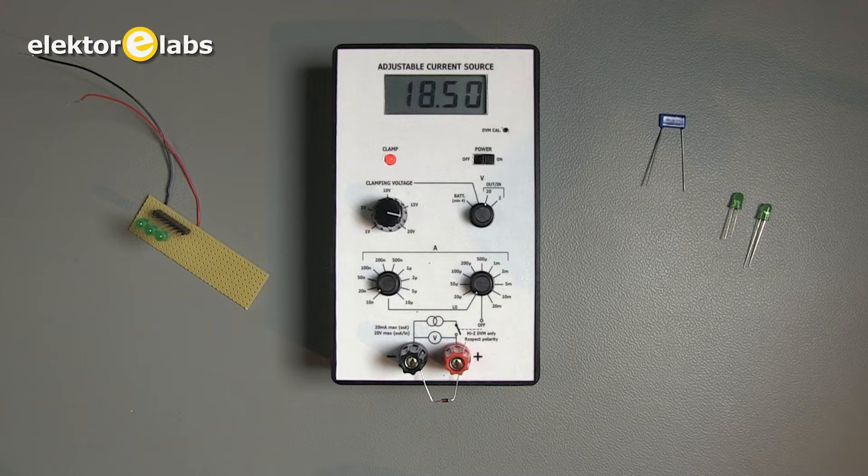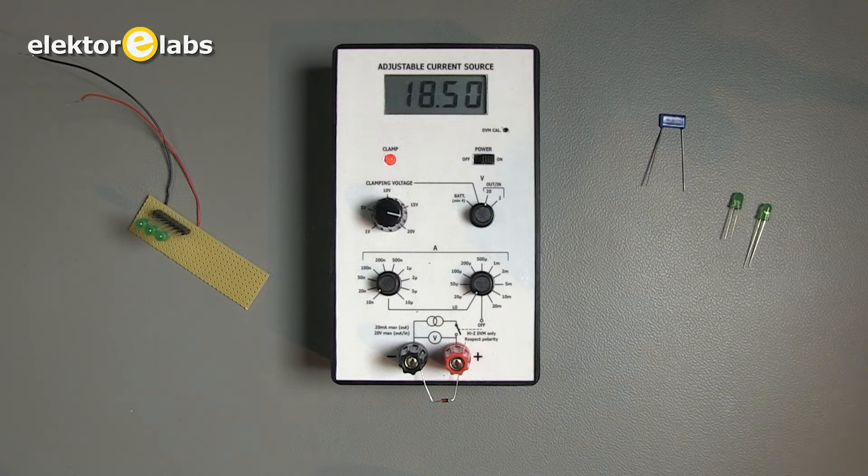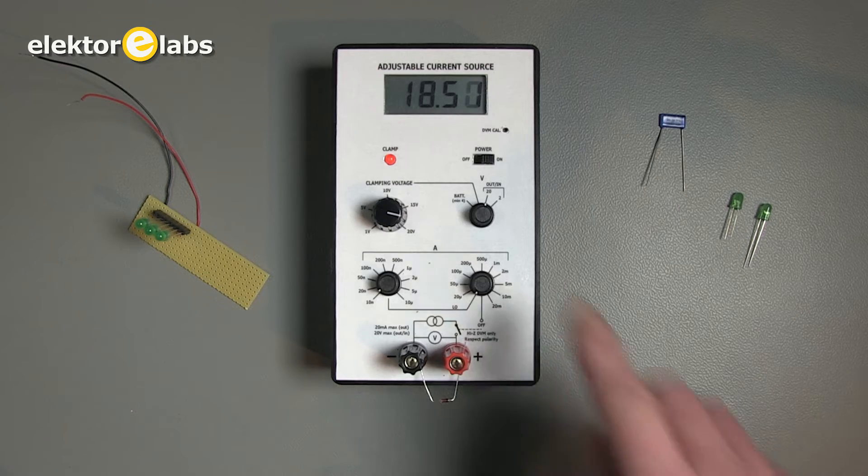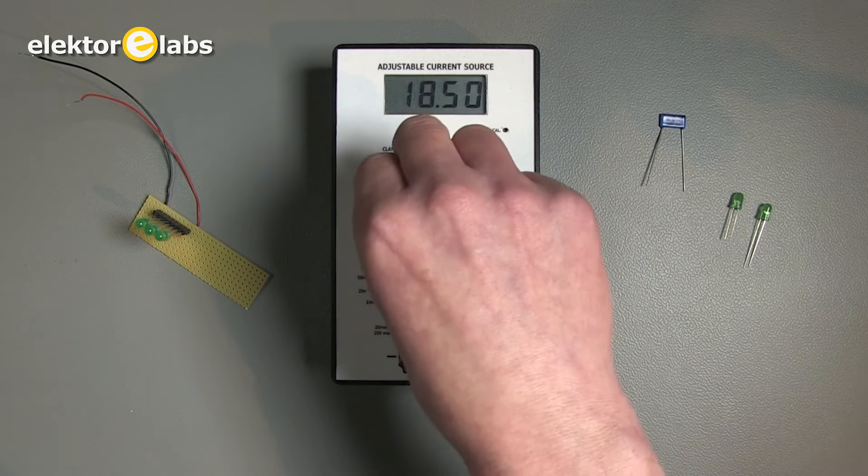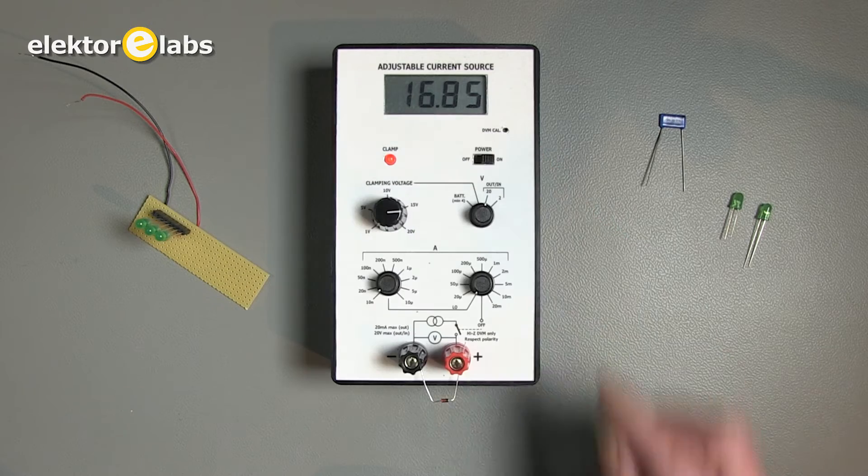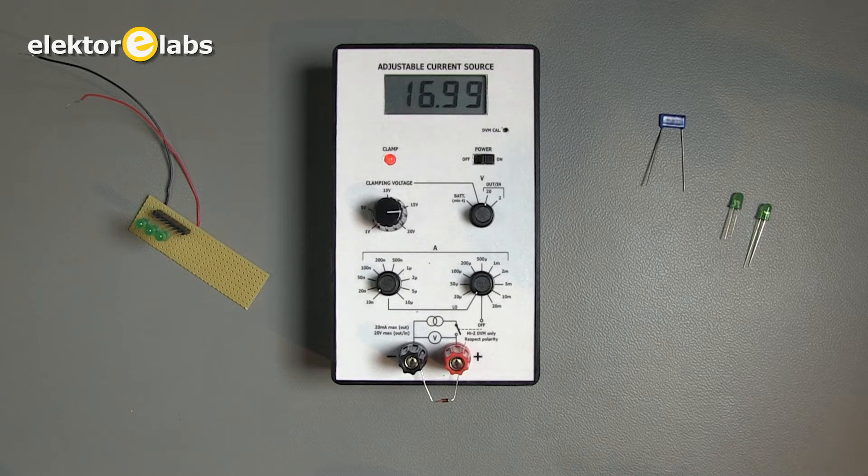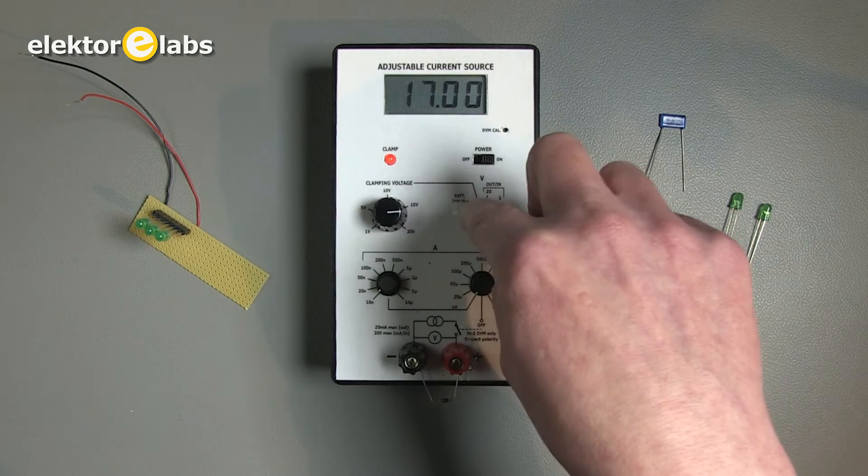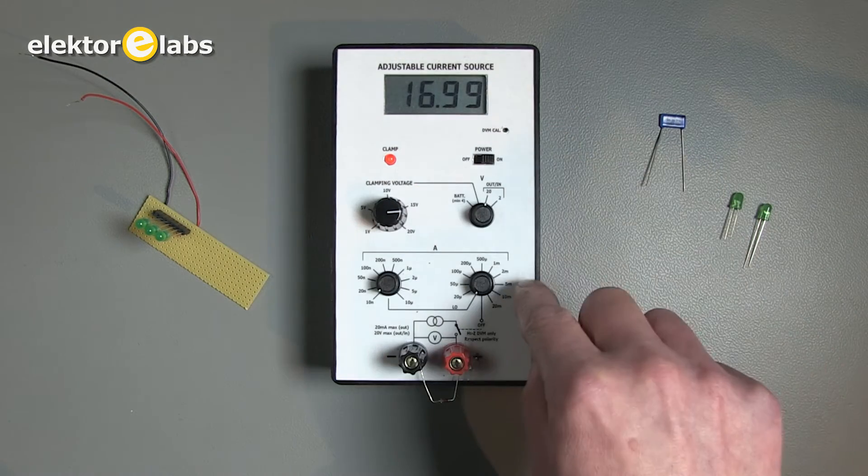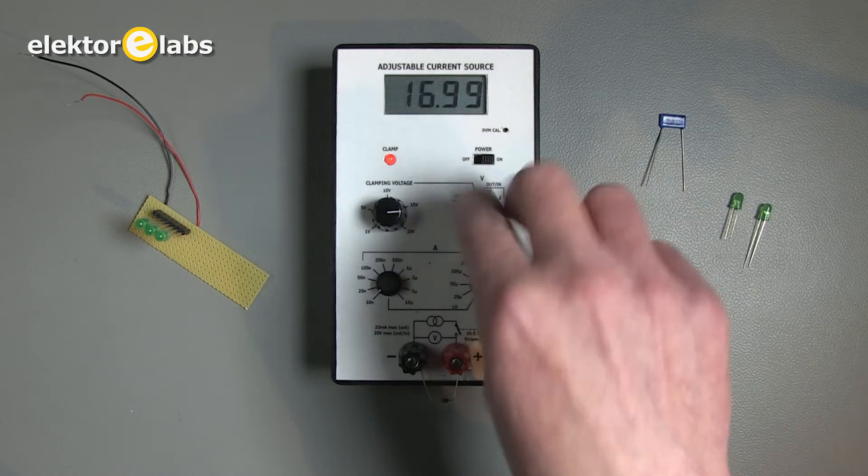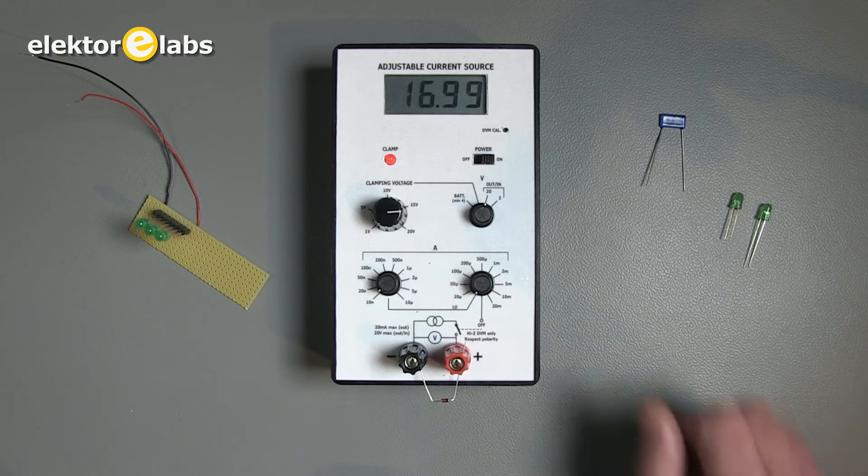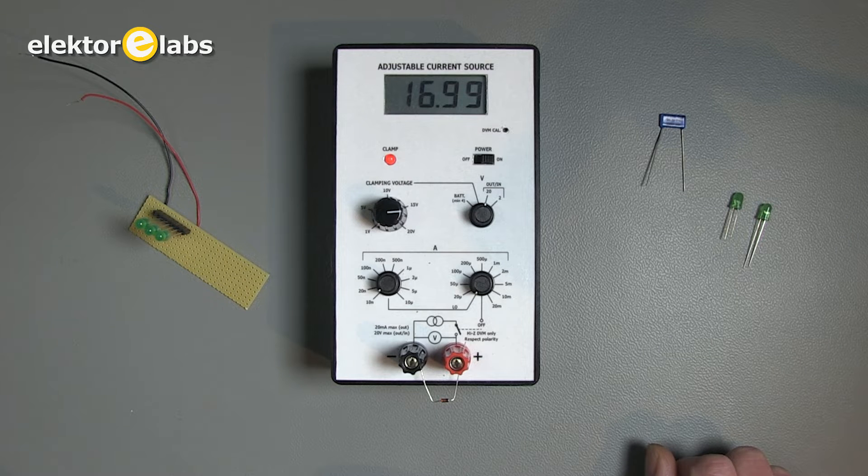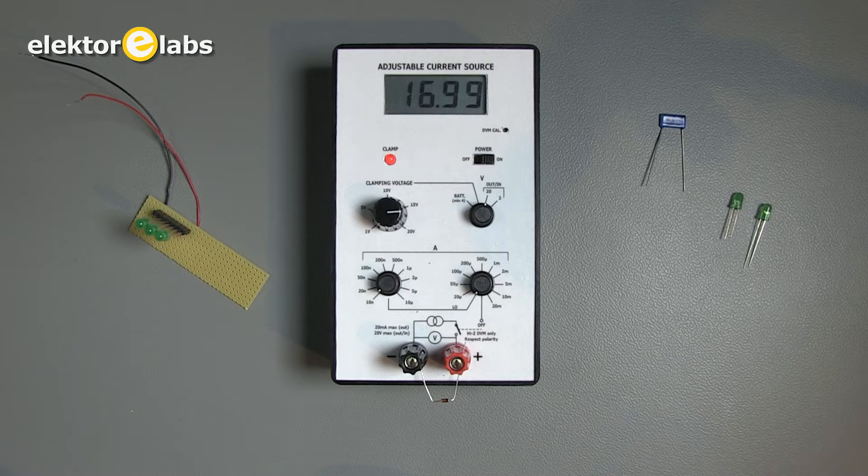This instrument contains a voltmeter which shows the voltage across these two terminals. There is one dial for adjusting the clamping voltage across the device under test. Here we can select the range of the voltmeter and measure the battery voltage inside and measure the clamping voltage. The two dials here are used to adjust the current this instrument is going to deliver.